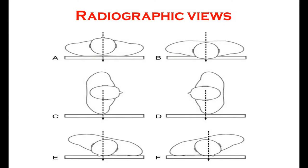Now, what are the different radiographic views? When the individual stands facing towards the X-ray tube, X-rays pass from the anterior aspect of the body to the posterior aspect. This view is called the anterior-posterior (AP) view.